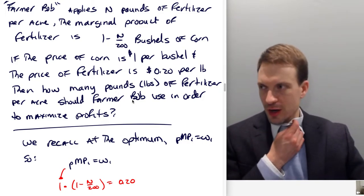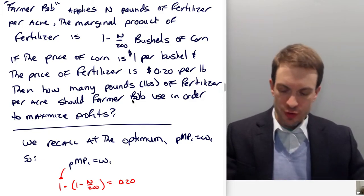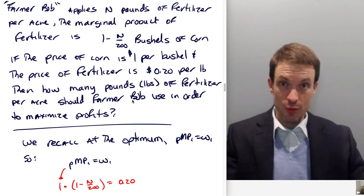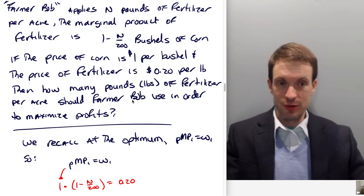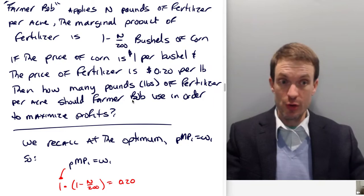Our first order condition is just going to be P·MP₁ equals ω₁ and P·MP₂ equals ω₂ for a two-factor or two-input problem. Here we have one input, and so at the optimum we're just looking for P·MP₁ equals ω₁.